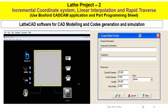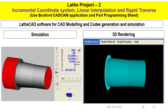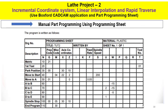You will use the same software to draw the key drawing of the model, but this time using the incremental or relative coordinate system. Then we will simulate and do 3D rendering. This is the programming sheet, and these codes are manually drafted using the relative or incremental coordinate system, so you can compare this sheet with the absolute coordinate system sheet and see the difference.